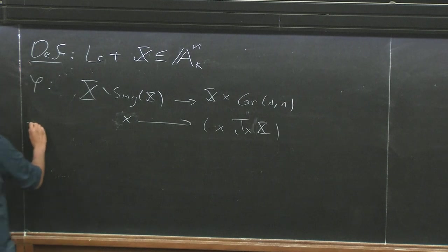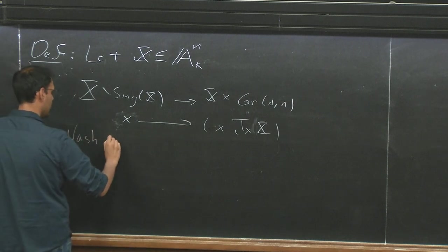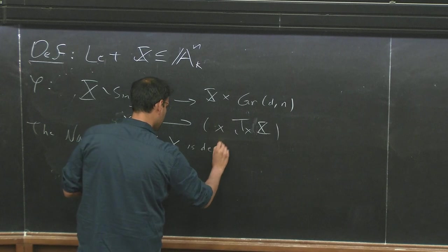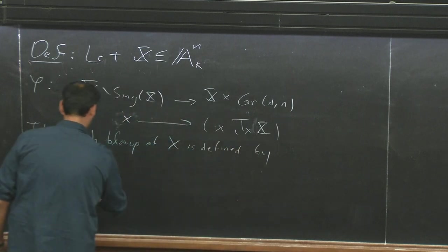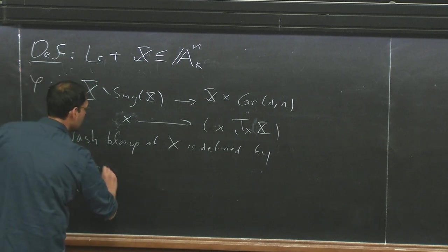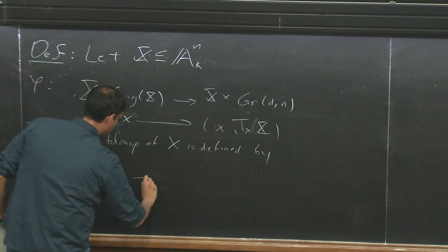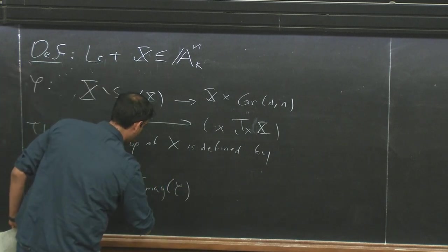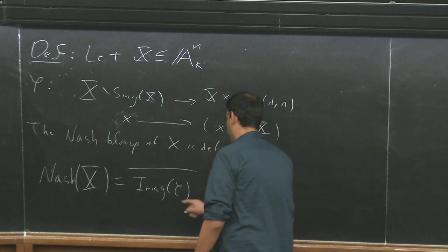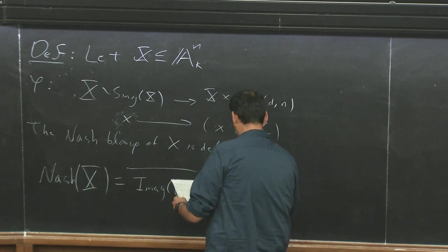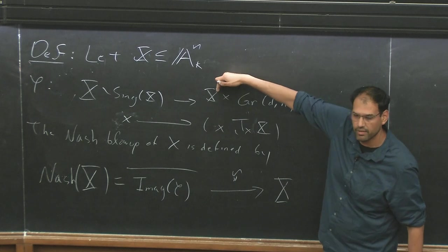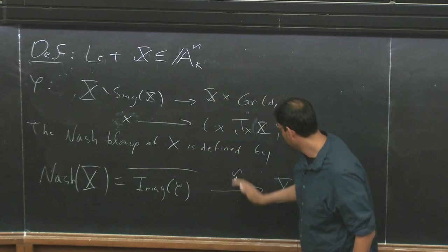So the Nash Blow-up of X is defined by taking this map, looking at its image, and then taking the Zariski closure. So that is a variety, and this comes together with a map. We have a map from here to X, which is given by the projection map. We take the projection map and restrict it. So that's a particular map.